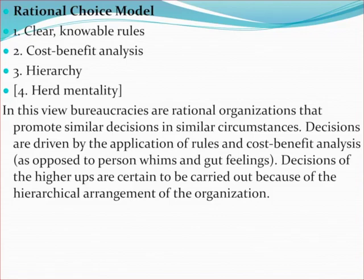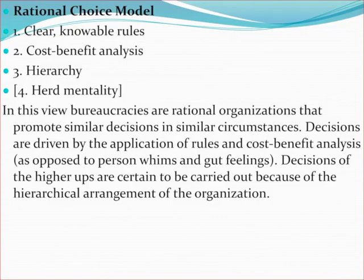Does this model reflect reality? In the 20th century, this has been the dominant, textbook model of bureaucracy. To a great extent, it does reflect reality. Clear and noble rules are something that bureaucratic organizations in the modern state have tried to strive for. Clear and noble rules are the opposite of the random whim of a ruler. Organizations want to operate based on rules that are clear, that can be known — and if we couldn't understand them ourselves, at least our lawyers could read and understand them for us.